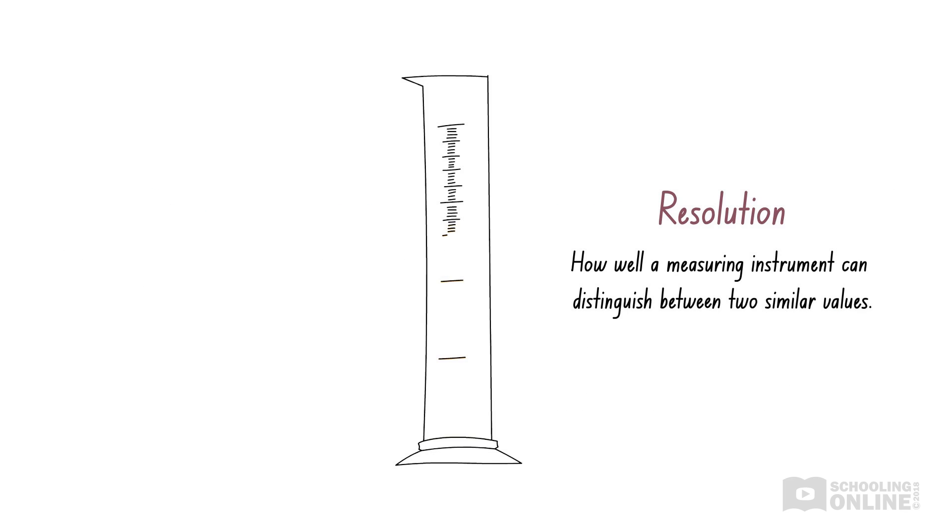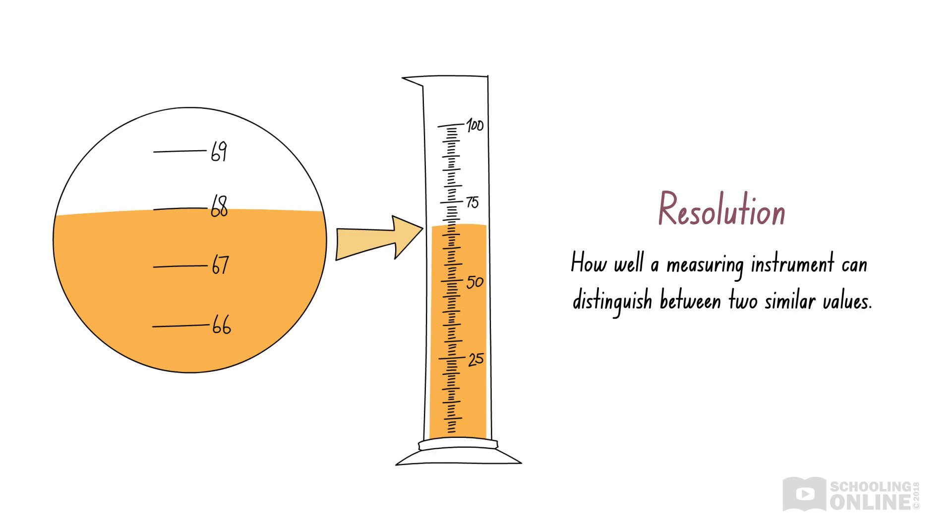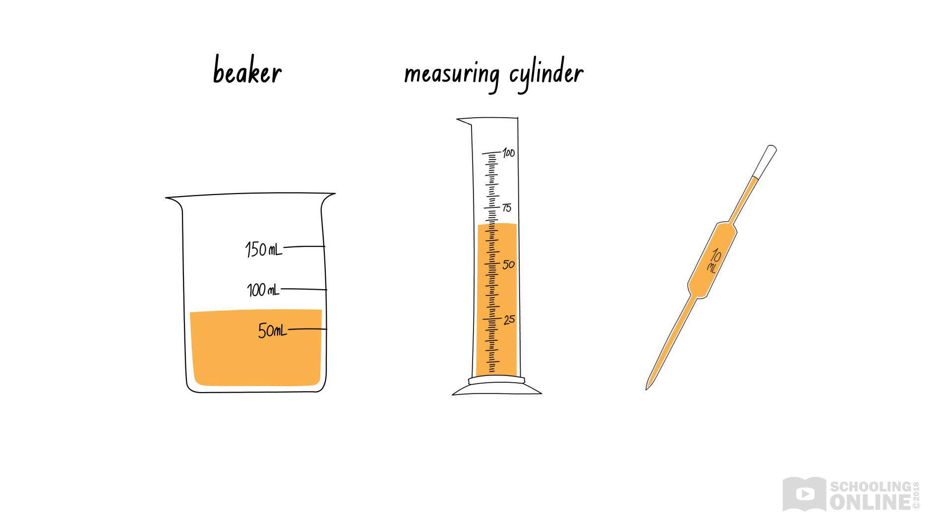But if we use a measuring cylinder, which has increments of 1 milliliter, we can see that the volume is 68 milliliters. Our measurement is now more accurate as the measuring cylinder can give us a number that is closer to the true value. If we want to be even more accurate, we can use a pipette, which is usually accurate to a fraction of 1 milliliter.